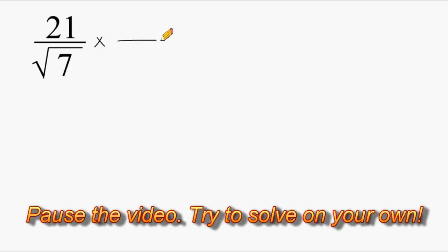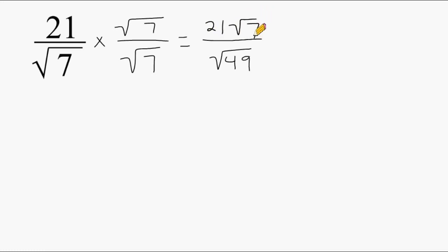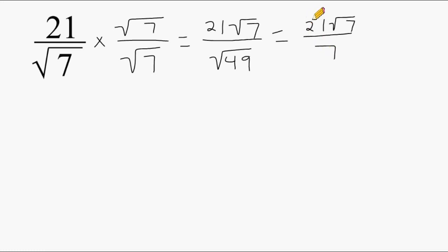Let's try another example. Once again we write the square root of 7 on the bottom and on the top, keeping in mind that really means the number 1 — it's just a different way of writing 1 whole. On the bottom that gives us the square root of 49, and on the top we have 21 times the square root of 7. The square root of 49, which is a perfect square, is 7. We can simplify 21 over 7: 21 divided by 7 is 3, so our final answer is 3 times the square root of 7.